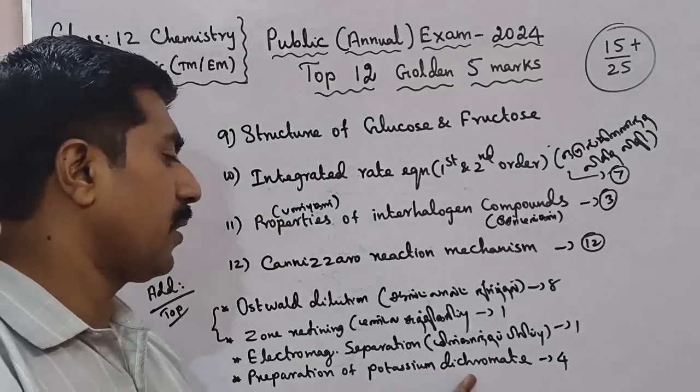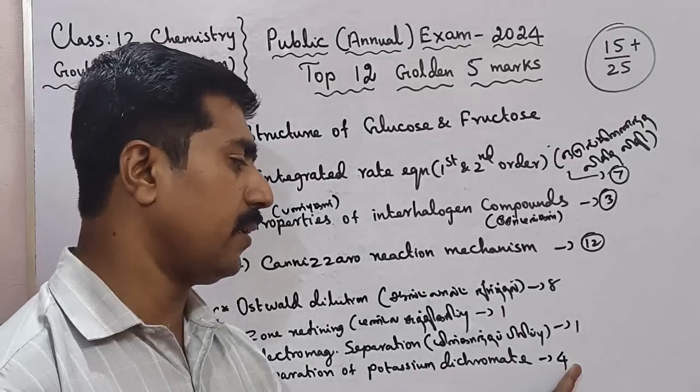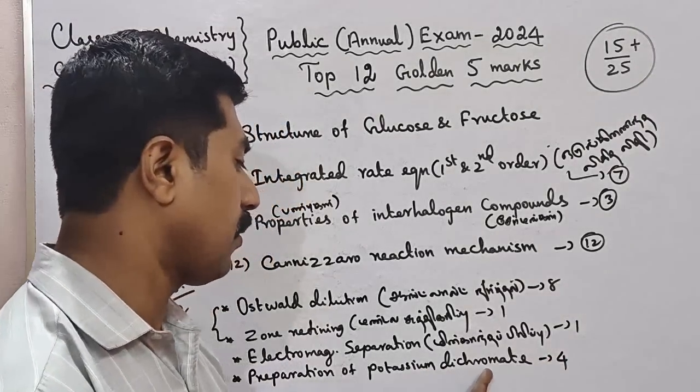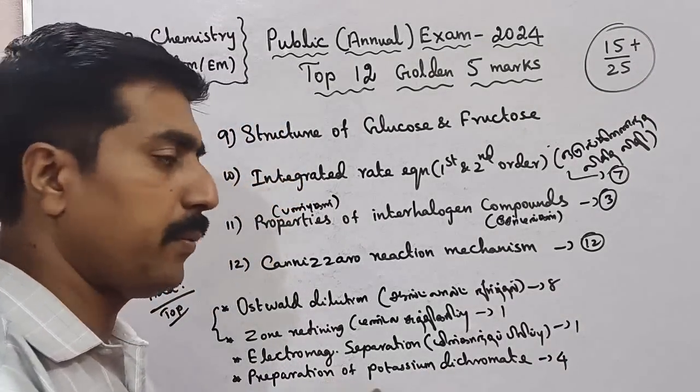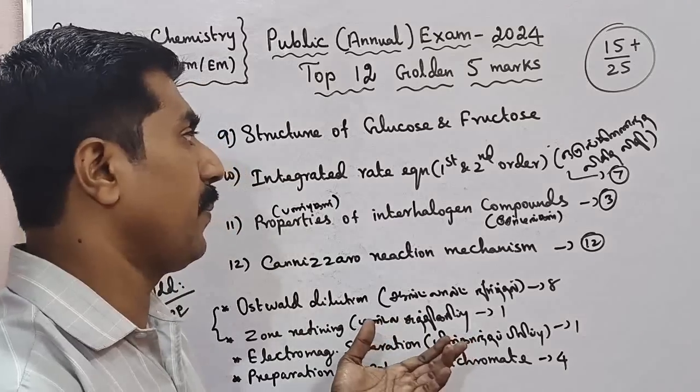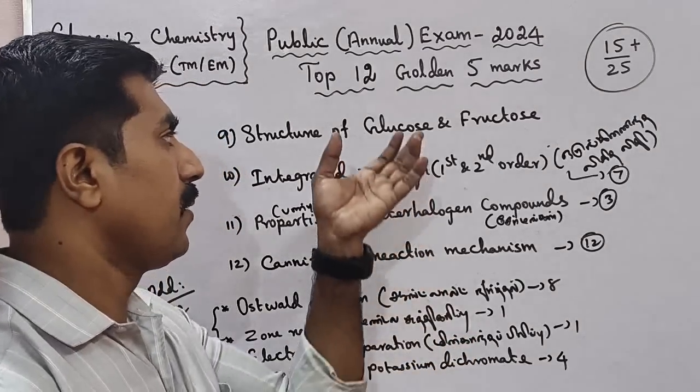Potassium Dichromate — Unit 4. That adds 2 more questions to prepare. Okay, set and prepare.